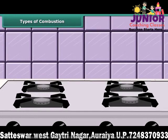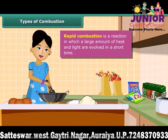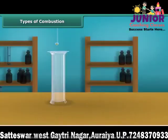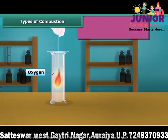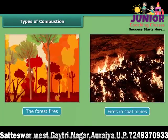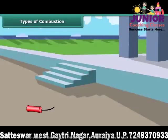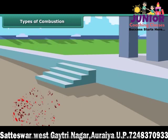Let us now look at types of combustion. A lady igniting LPG in a kitchen to make food — LPG burns quickly producing a lot of heat. This type of combustion is called rapid combustion. When white phosphorus is left in the open for some time, it catches fire on its own. This type of combustion is called spontaneous combustion. Other examples include forest fires and fires in coal mines. When a cracker burns, it produces a large amount of heat, light, and sound. This type of combustion is called explosion.